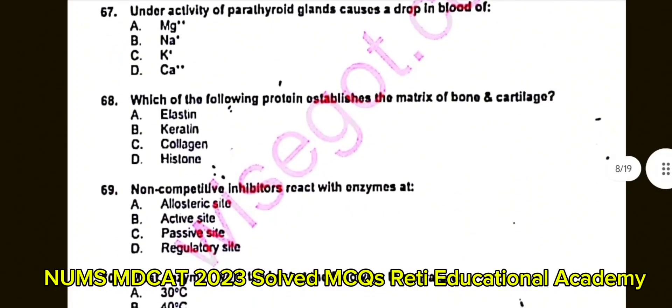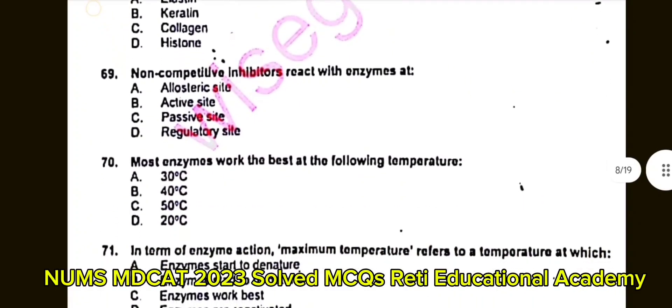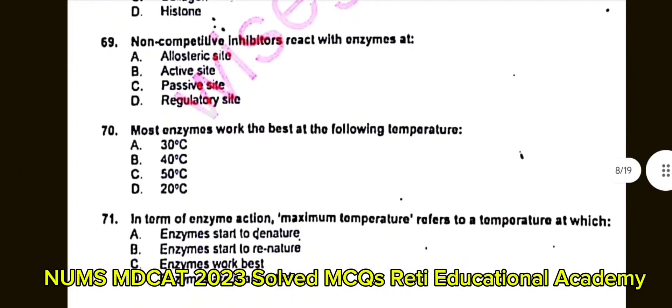Question number 69: Non-competitive inhibitors react with enzymes at? A. Allosteric site. B. Active site. C. Passive site. D. Regulatory site. The correct answer is A: Allosteric site.